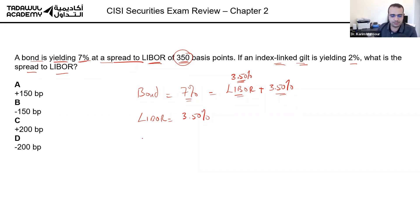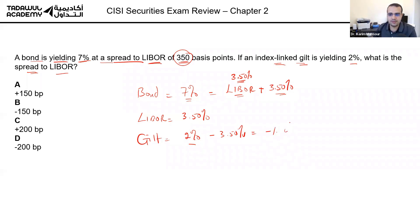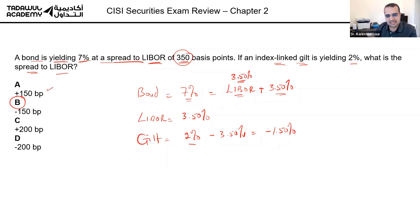If the gilt is yielding two percent and LIBOR is 3.5 percent, what is the spread of the gilt to LIBOR? The gilt is two percent and LIBOR is 3.5 — two minus 3.5 gives you minus 1.5 percent, or minus 150 basis points. Not plus, because you're comparing the gilt to LIBOR, not LIBOR to the gilt. Since the gilt is less than LIBOR, the spread is negative. The answer is B.